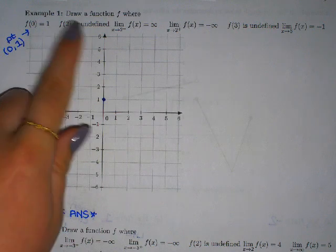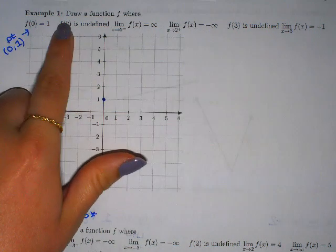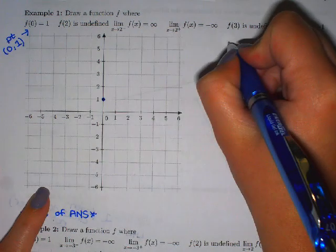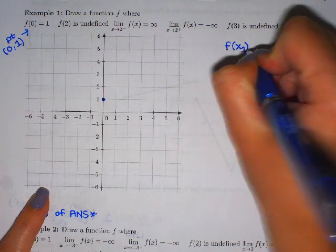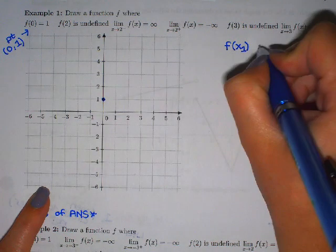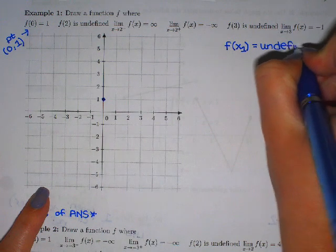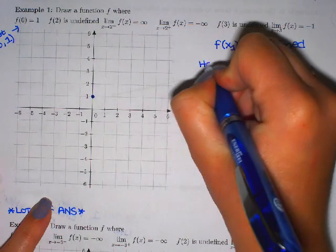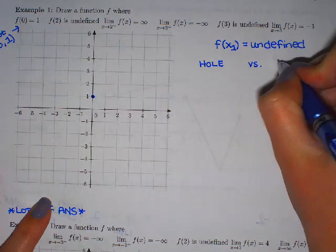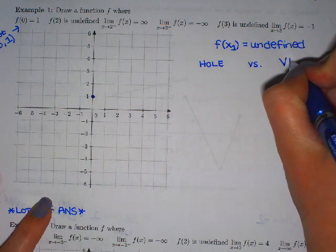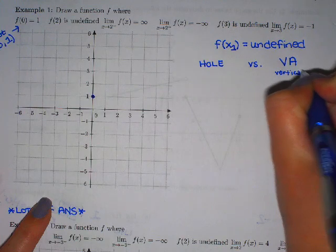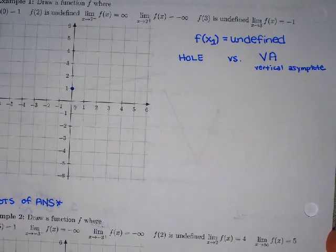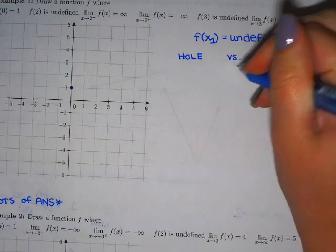The second thing we have is f(2) is undefined. Going back to algebra, if it's undefined that means you plugged it in and it gave you an error on your calculator. There are two reasons why something could be undefined. So if plugging in a specific x value is undefined, there are two ways you could draw that on a graph: one could be a hole, and one could be a vertical asymptote — which I'll normally write as VA. It's a vertical asymptote, spelled A-s-y-m-p-t-o-t-e.